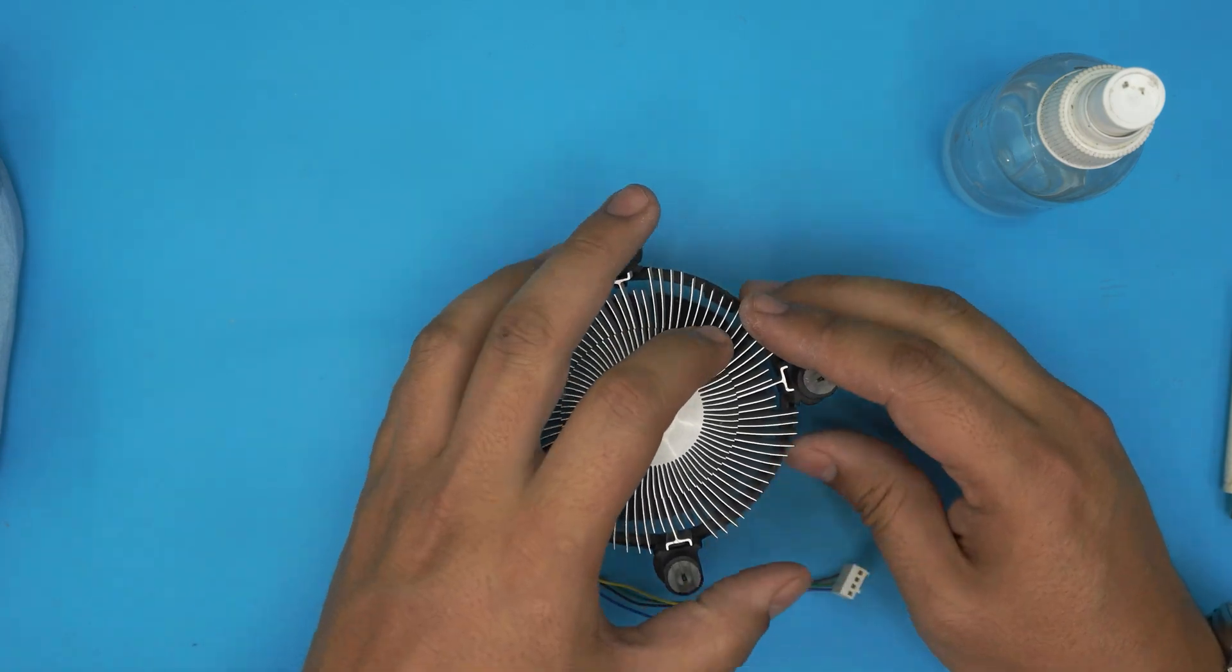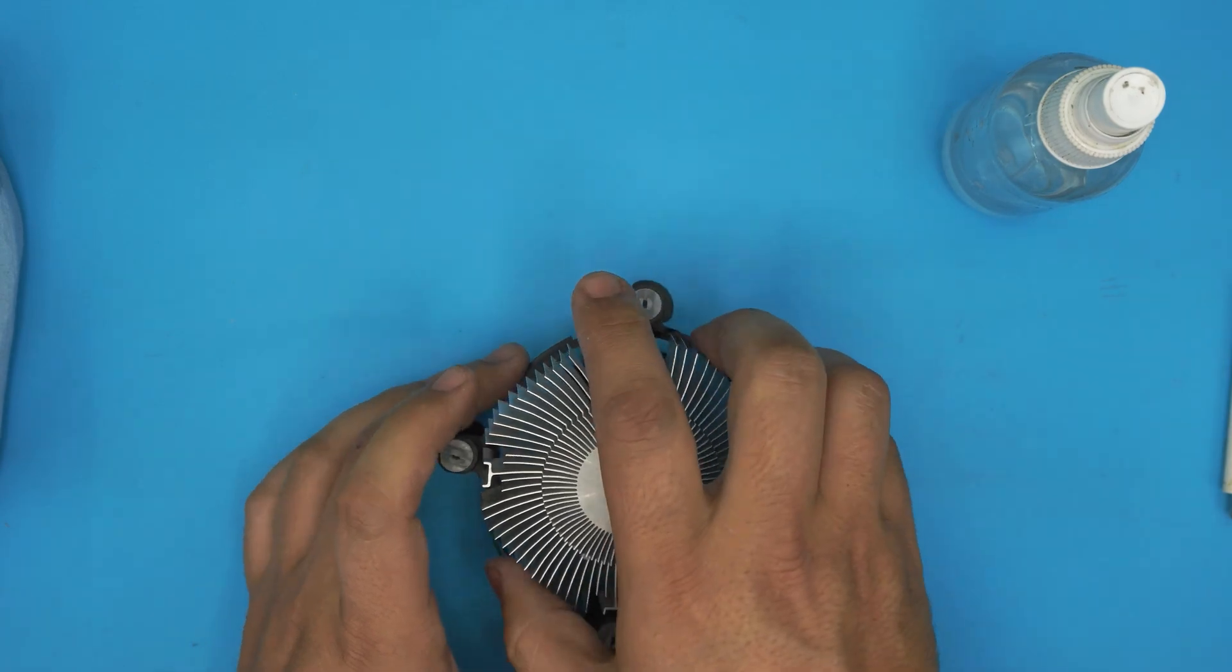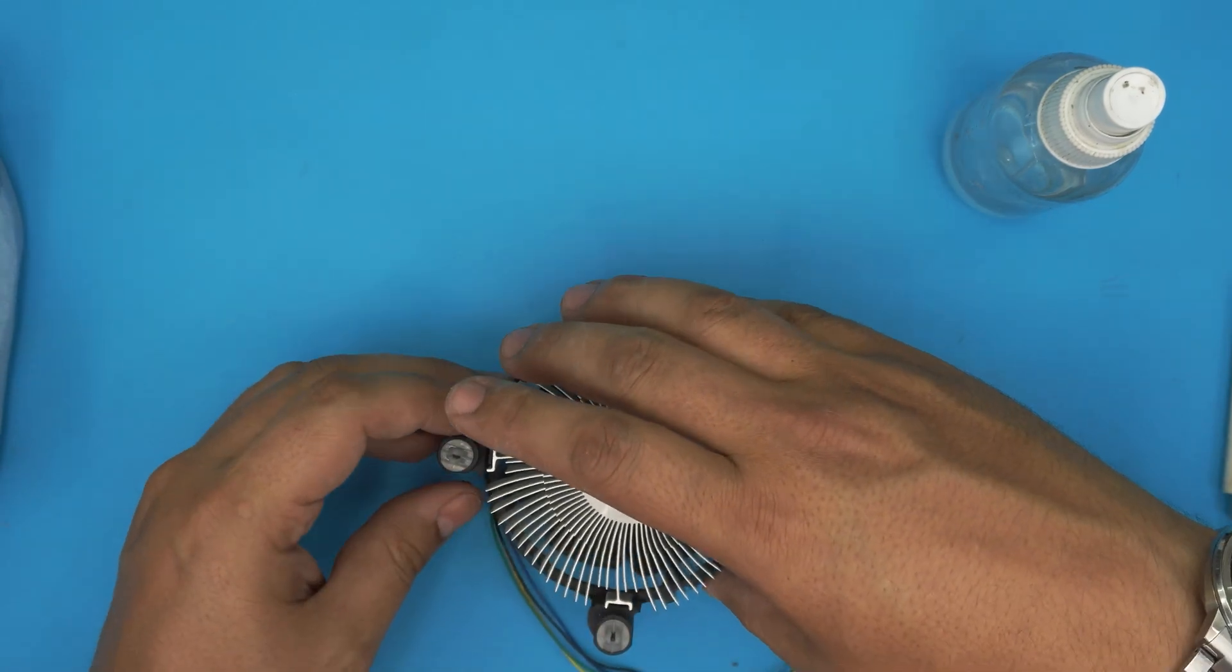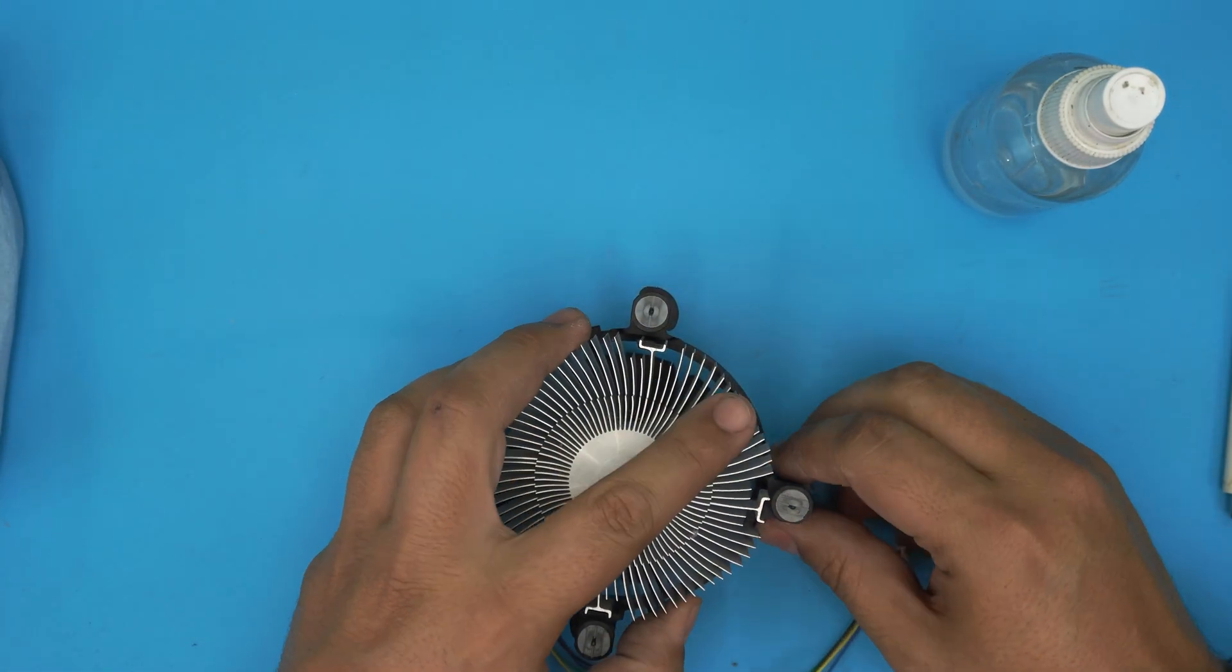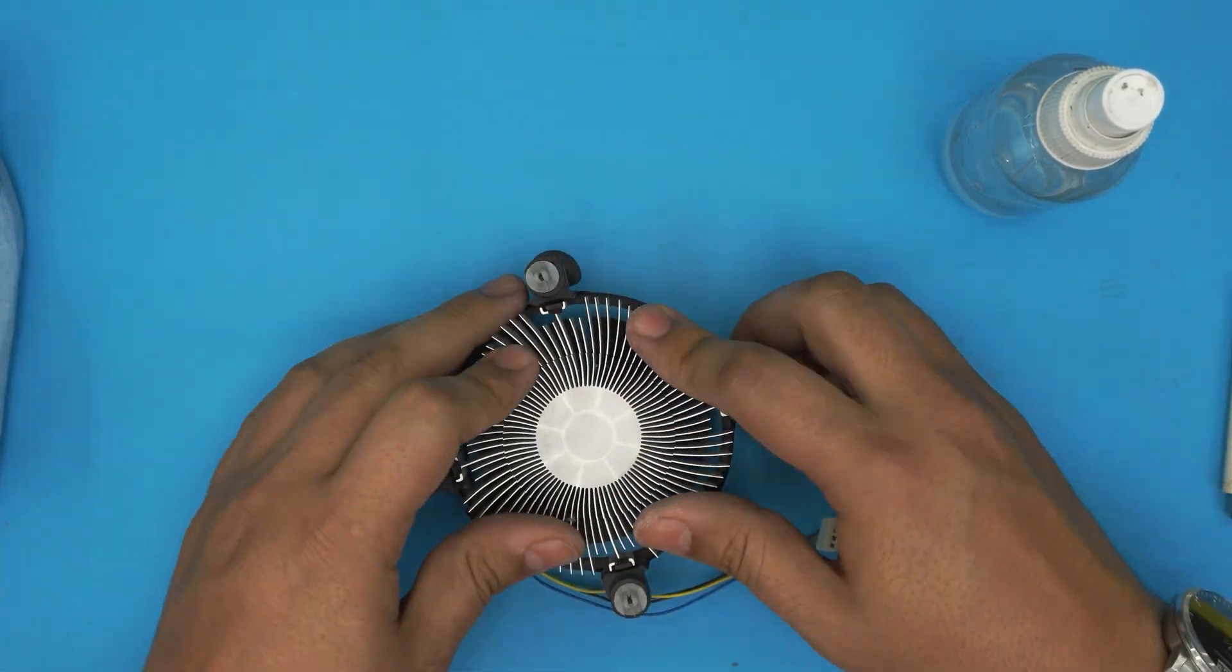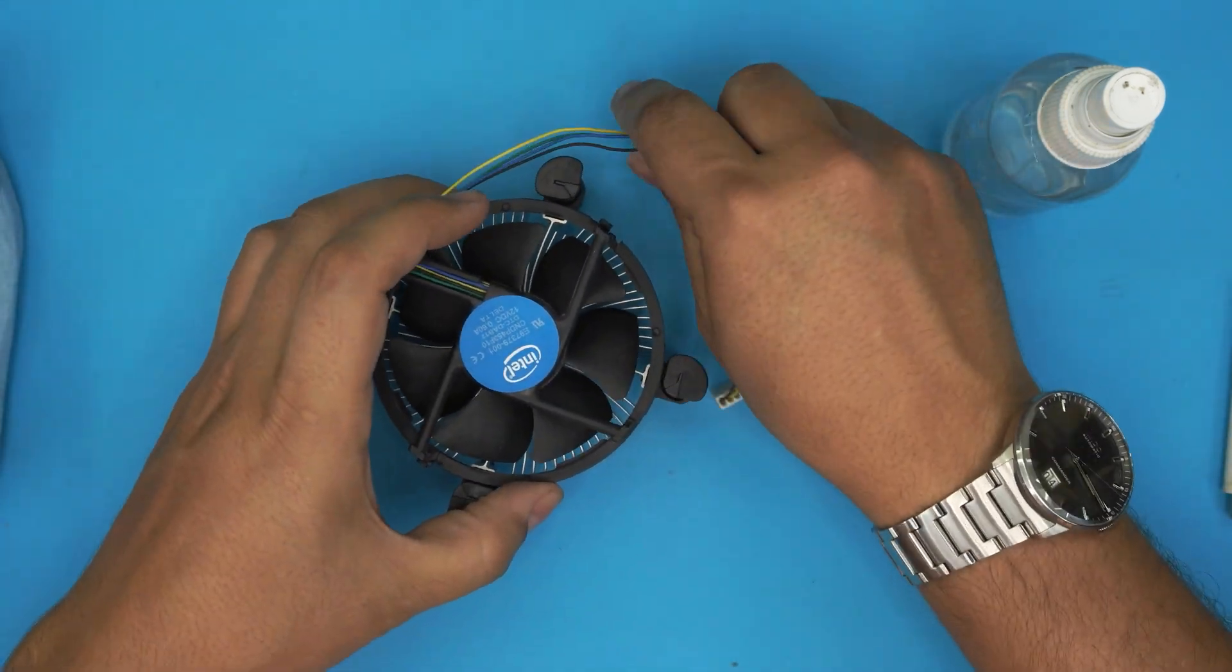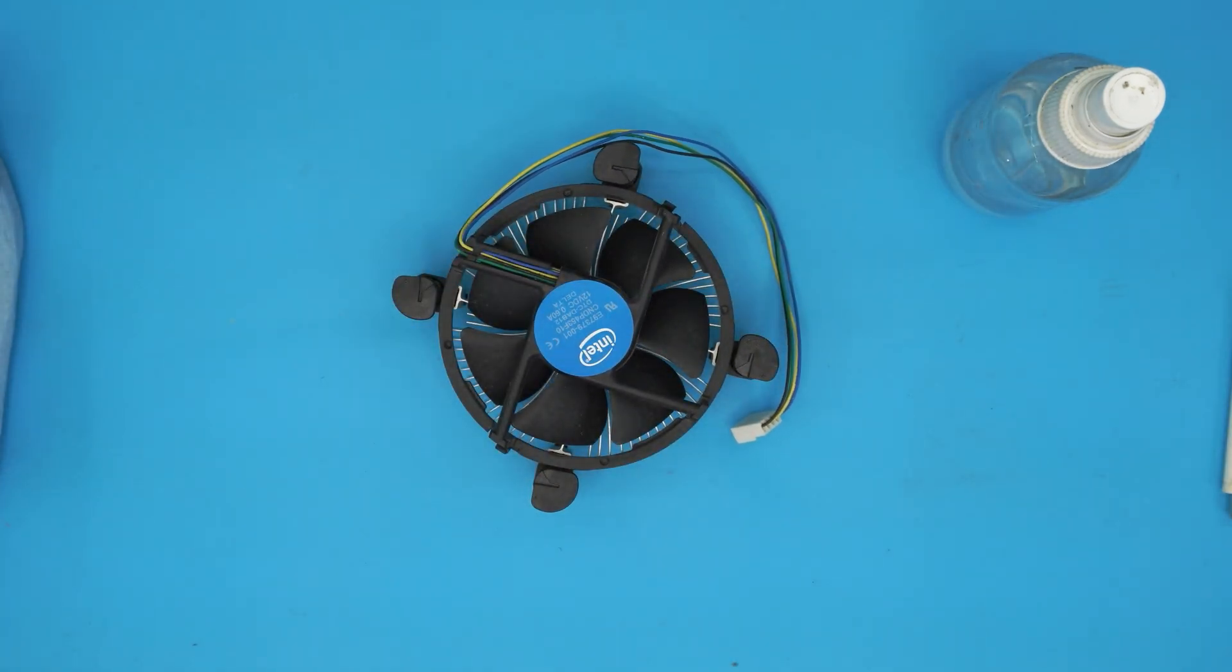And you want to push it down evenly. So let's try to rotate until you get the right angle. There we have it. And that's how you clean up your CPU heatsink. Thanks for watching and I'll see you in my next video.